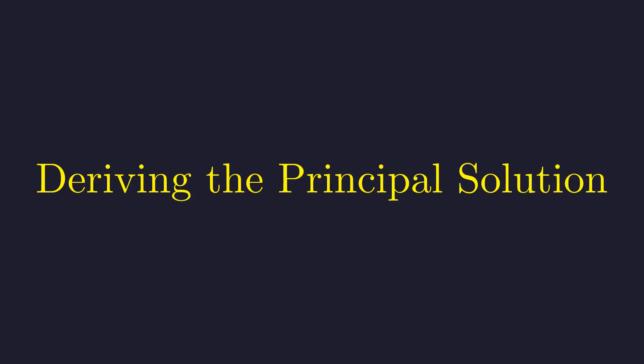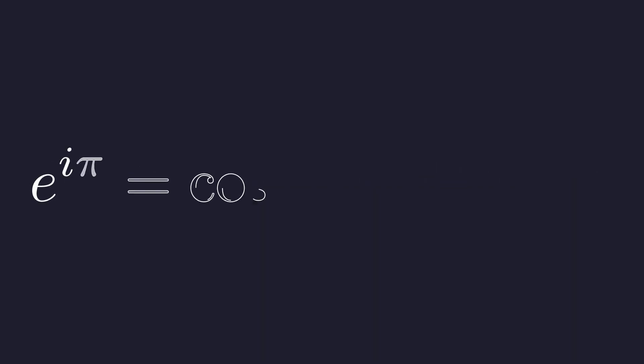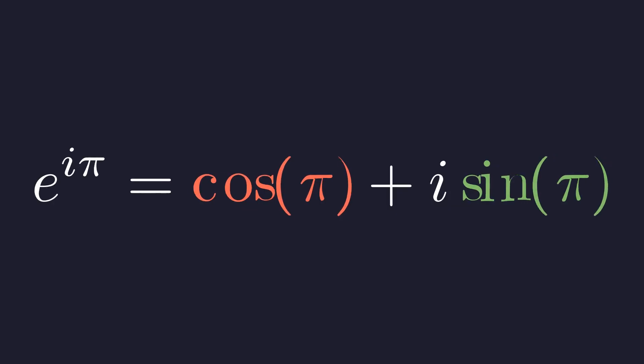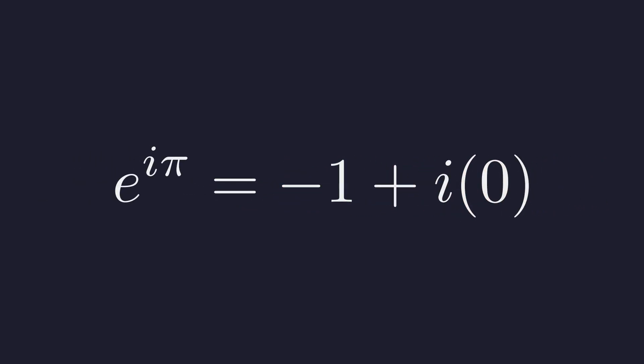Now, we substitute this specific angle back into Euler's formula. Substituting pi for theta, we get e to the i pi equals cosine of pi plus i times sine of pi. Next, we evaluate these well-known trigonometric values. The cosine of pi is negative 1 and the sine of pi is 0. This simplifies to the celebrated Euler's identity, often called the most beautiful equation in mathematics. We have now expressed negative 1 as e to some power. The path to our solution is now clear.